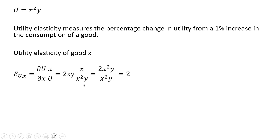Now it's just a matter of simplifying. 2xy times x is 2x squared y, all divided by x squared times y. And so that's just going to leave us with 2. So the utility elasticity of good x is 2.